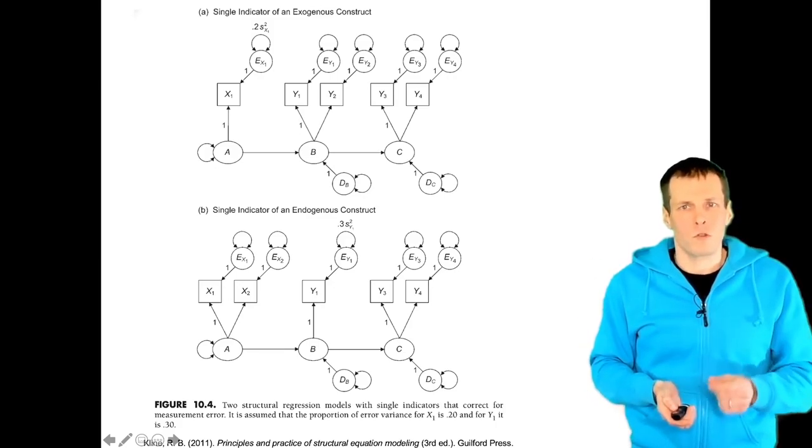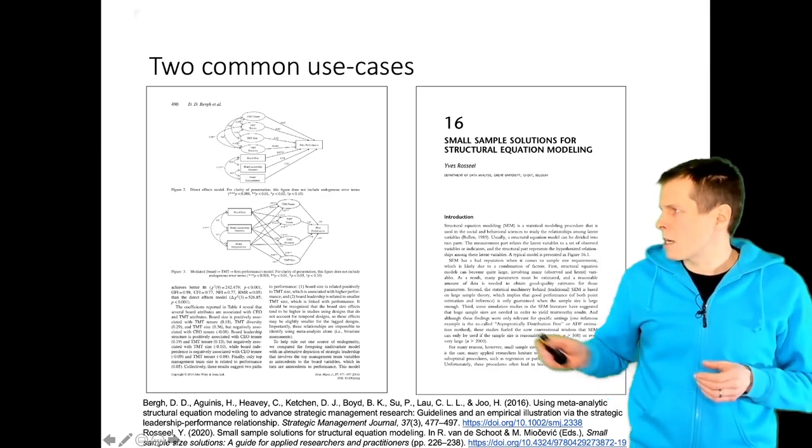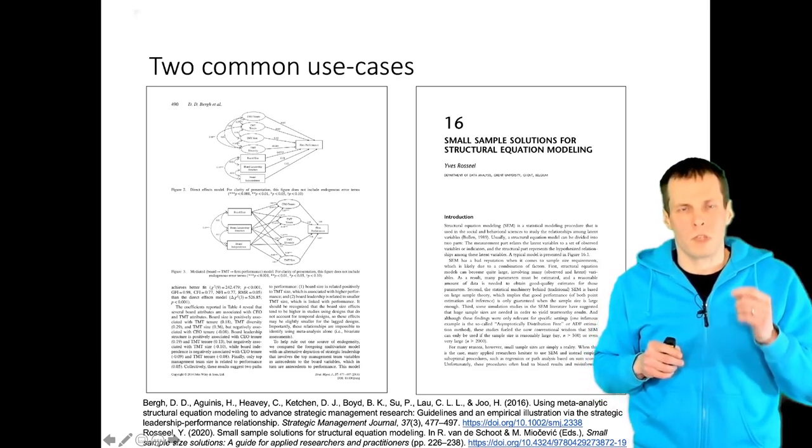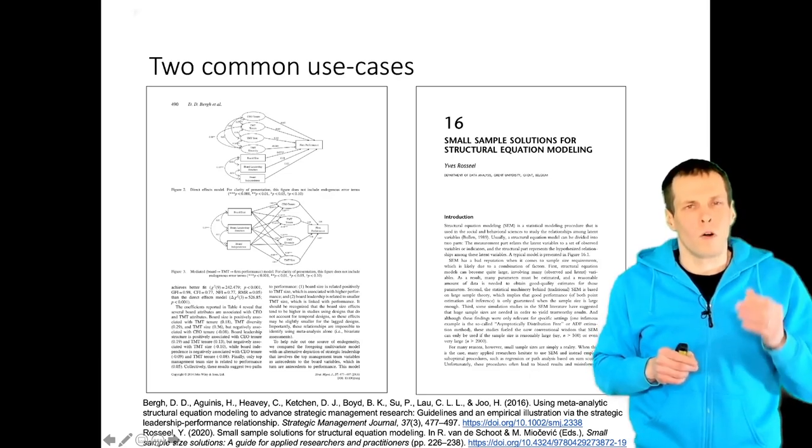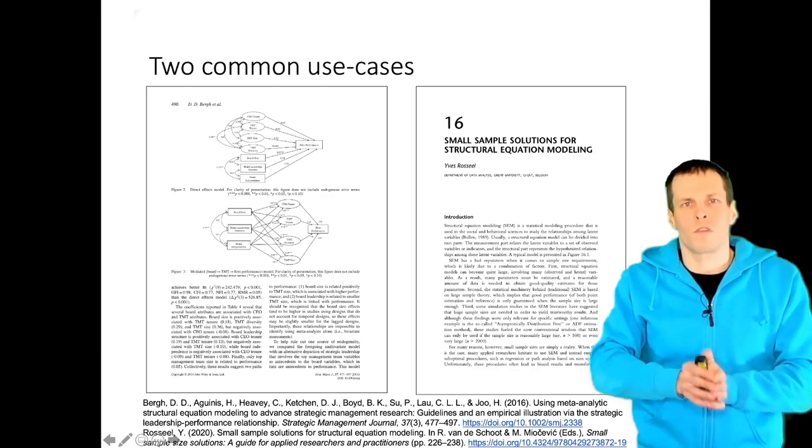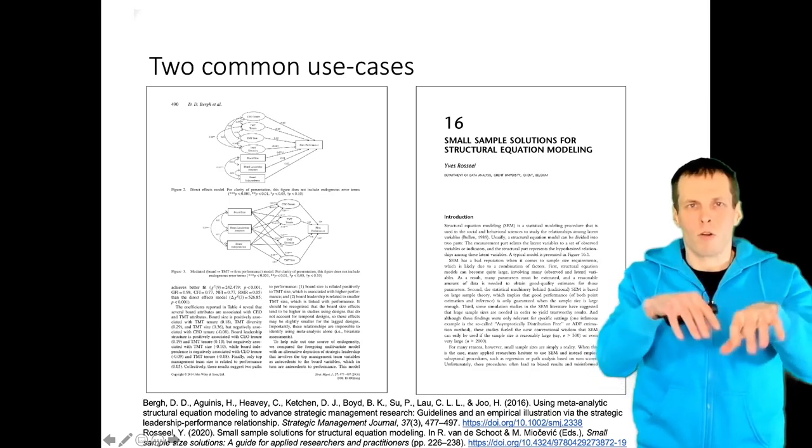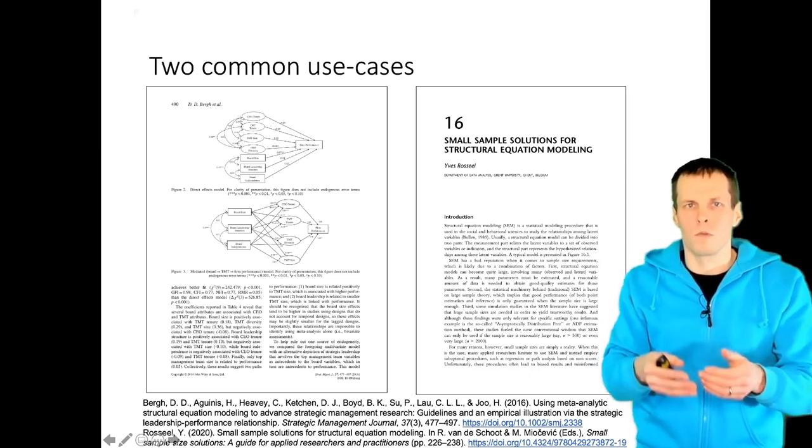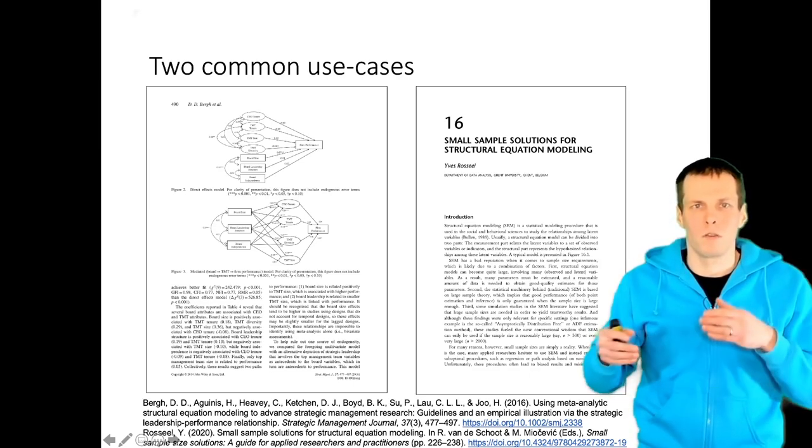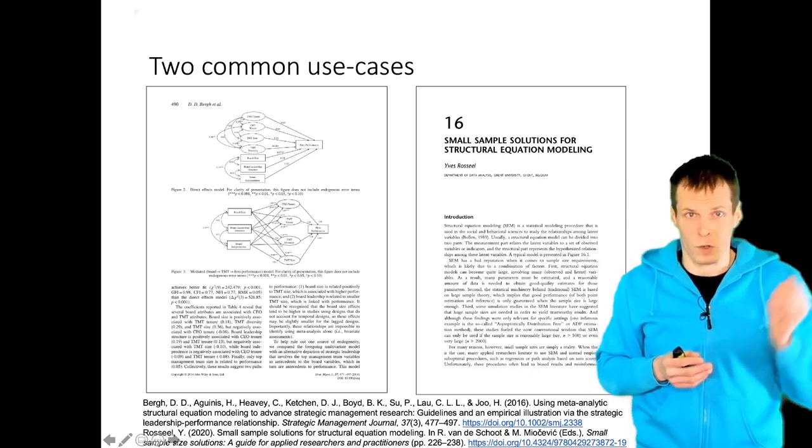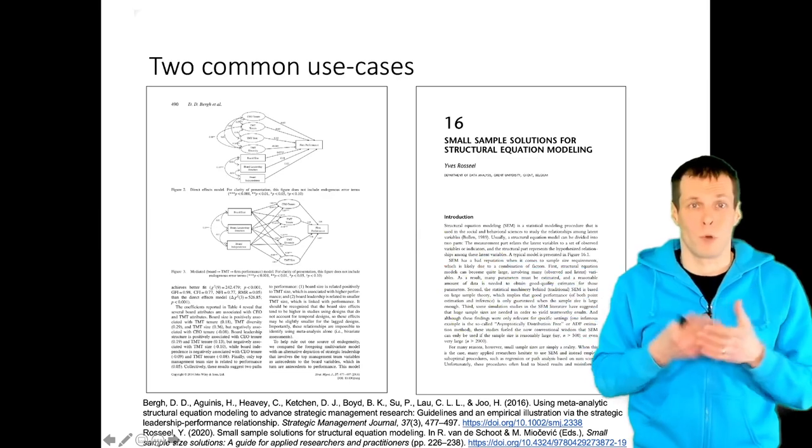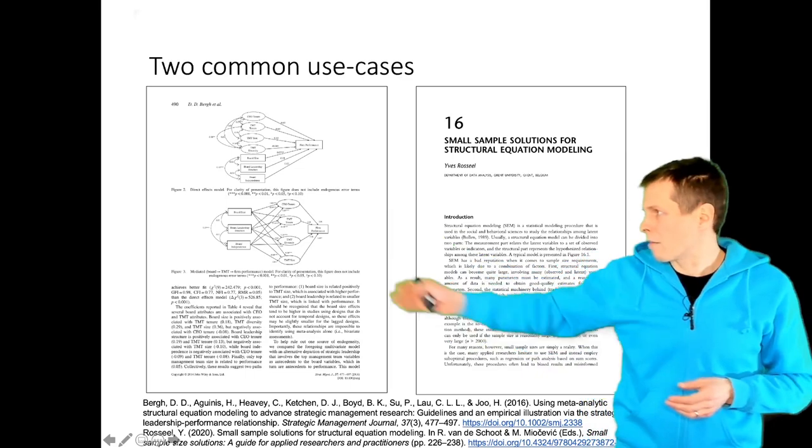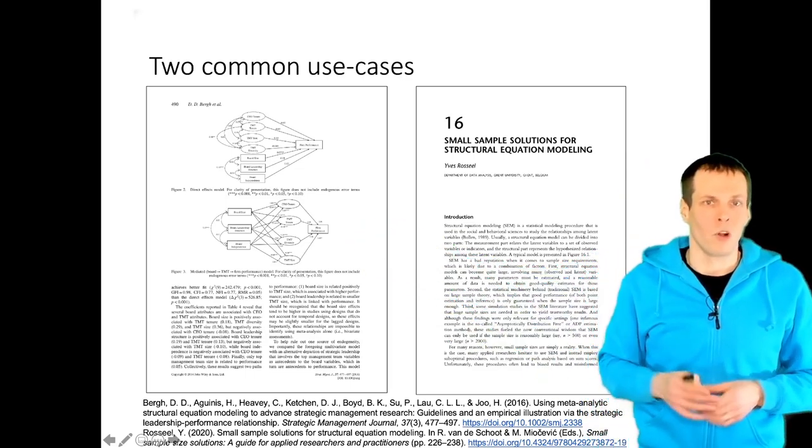This technique has two common use cases. The first use case is meta-analytical structural equation modeling. So in meta-analysis you often use estimated reliabilities of variables and you observe correlations of those error-contaminated variables. So when you fit a structural equation model to a matrix that you assume contains measurement error, then you can use errors in variables to correct for the measurement error. This article by Berka and co-authors for example applies that technique to a subset of their variables indicated by circles. The boxes are assumed to be perfectly reliable and there is no correction.